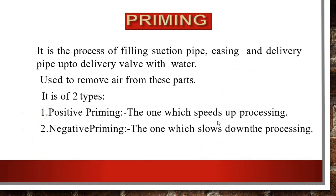Always remember: before starting a centrifugal pump, priming is very necessary. Priming is the process of filling the suction pipe, casing, and delivery pipe up to the delivery valve with water, so that the air pockets present inside the casing are removed and the efficiency of the pump is not affected. Priming is used to remove air from the parts. It is of two types: positive priming, which speeds up the process, and negative priming, which slows down the process.